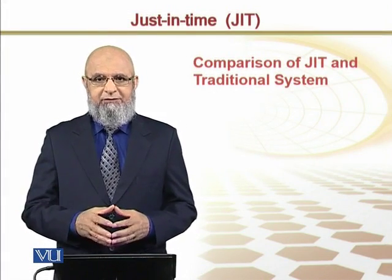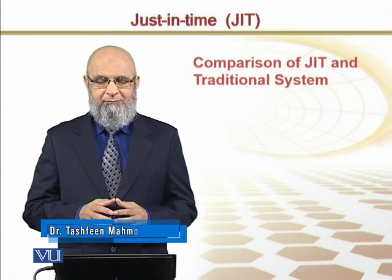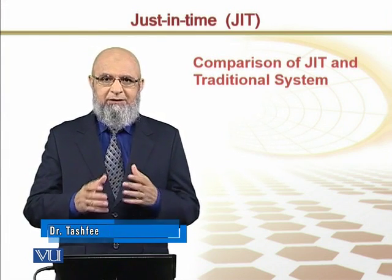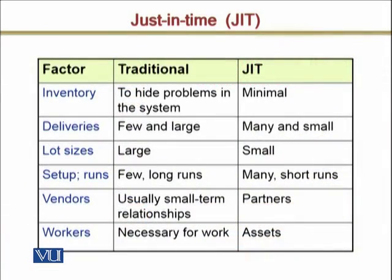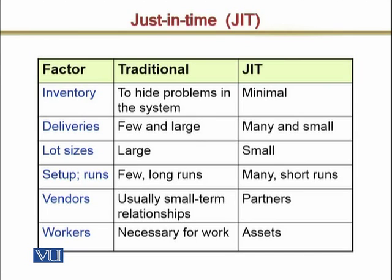Let's compare just-in-time and traditional manufacturing systems across a number of different areas. One area is inventory. In a traditional manufacturing system, we focus on smooth material flow. If a problem exists, instead of looking at it directly, we apply a corrective measure — because achieving smooth flow is seen as the easy task for management.